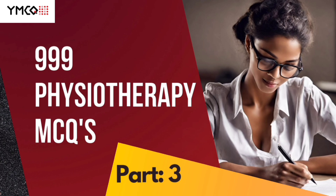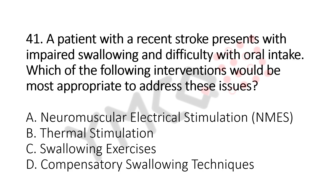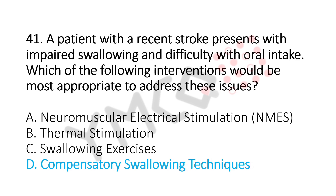Let's move to question number 41. A patient with recent stroke presents with impaired swallowing and difficulty with oral intake. Which of the following interventions would be the most appropriate to address this issue? Option A, neuromuscular electrical stimulation. Option B, thermal stimulation. Option C, swallowing exercises. Option D, compensatory swallowing techniques. And the answer is Option D, compensatory swallowing techniques.